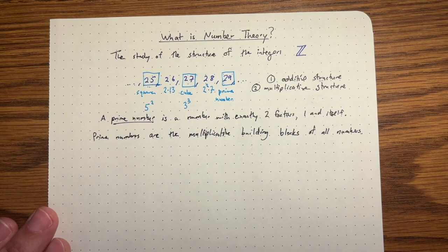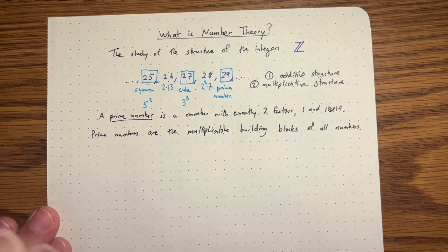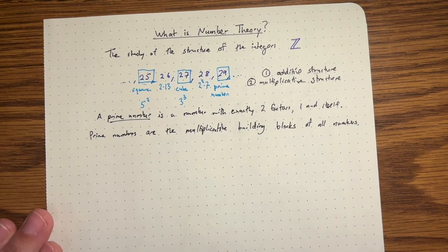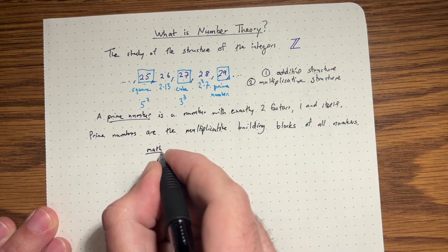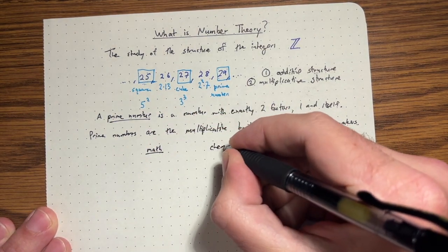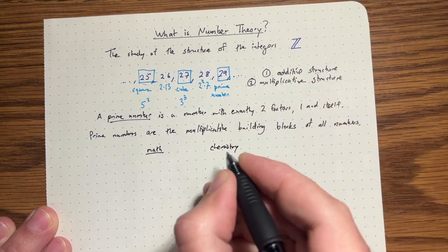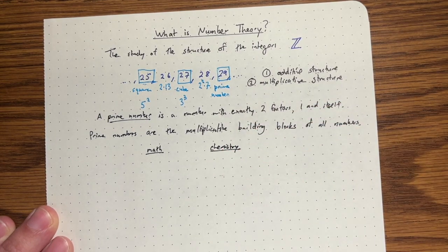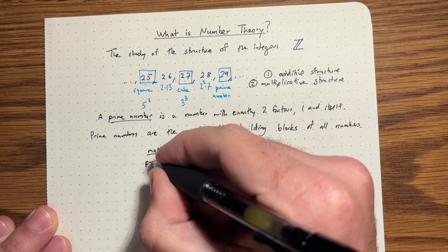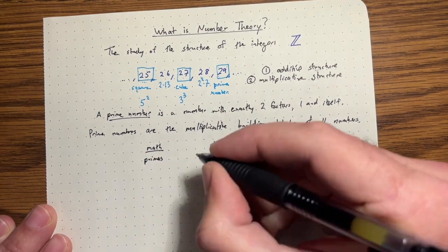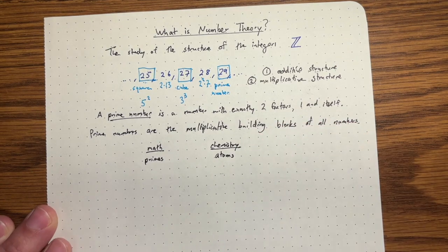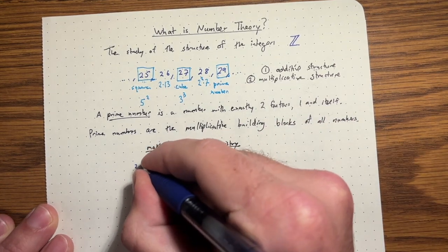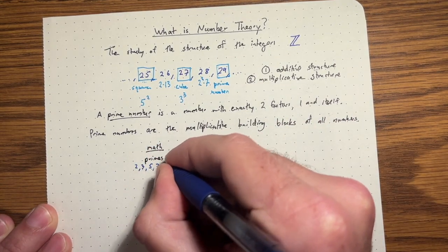And there's a rather neat analogy here between math and chemistry. Primes are like atoms. Primes are like 2, 3, 5, 7, 11, etc.